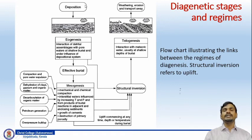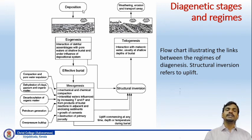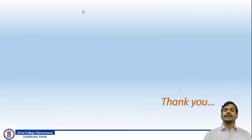This flowchart explains the various stages of diagenesis that include deposition, eogenesis, effective burial leading to mesogenesis, and then structural inversion leading to telogenesis. With this, we complete the topic on diagenesis and its various stages. Thank you.